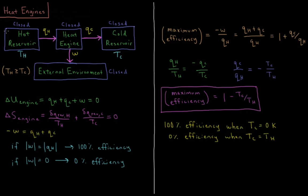This is why engines have to operate at a temperature typically above room temperature. For example, the engine of your car might be 100 Kelvin above the external atmosphere, giving an efficiency on the order of 25 to 30%. We want to maximize the temperature difference between the hot and cold reservoirs in order to minimize the heat we need to pump to the cold reservoir, ensuring the entropy change is positive and the second law is obeyed.